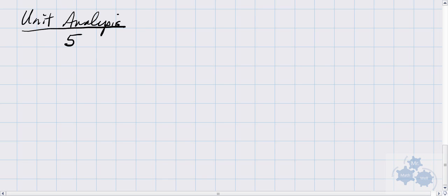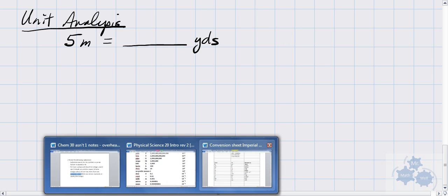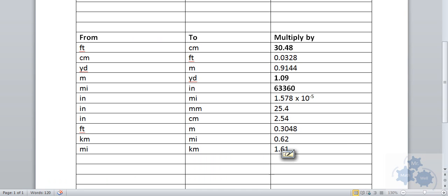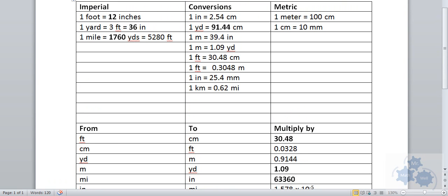So if we have an example like 5 meters equals how many yards, and you want to know whether you multiply by a number or divide by a number, what you want to do is you want to look at what the conversion factor is. So meters to yards, okay, let's write this down.